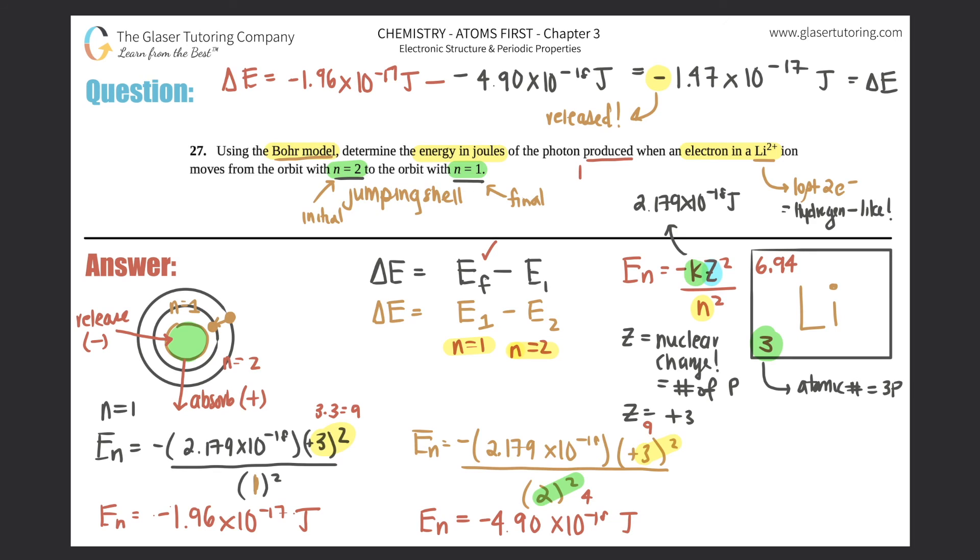They just want to know how much energy was produced. They didn't care about whether the energy was absorbed or released. They just wanted to know how much energy was produced. Well, 1.47 times 10 to the negative 17th joules were produced, but it was released because of that negative number. So that would be the answer. Just the positive of what you got. The negative is just for context.